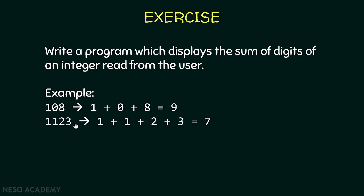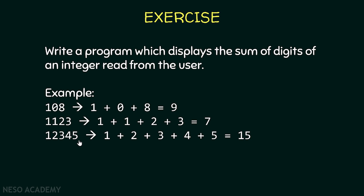we should calculate 1 plus 1 plus 2 plus 3 and display the result. And if the user enters a 5-digit number, we must calculate 1 plus 2 plus 3 plus 4 plus 5 and display the result. So our program can take numbers with different numbers of digits — 3 digits, 4 digits, 5 digits — we don't know how many digits we have.